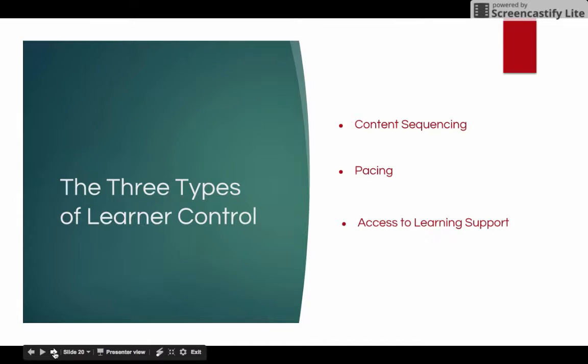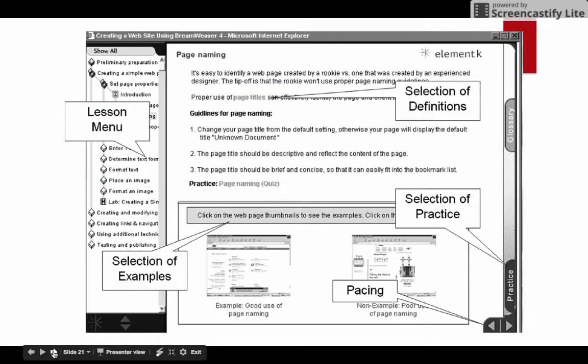There are three types of Learner-Controlled Environment within an asynchronous course. One is content sequencing, where the content is laid out in order and the learner can choose what they want to learn. The pacing, if a learner wants to stop or replay a video or skip a certain section. And access to learning support.